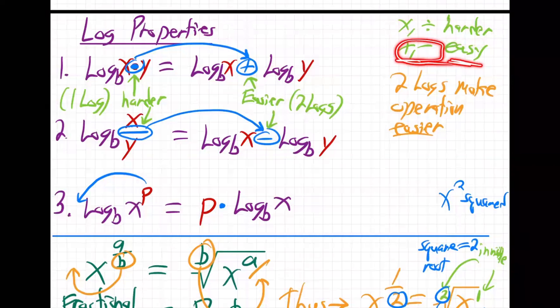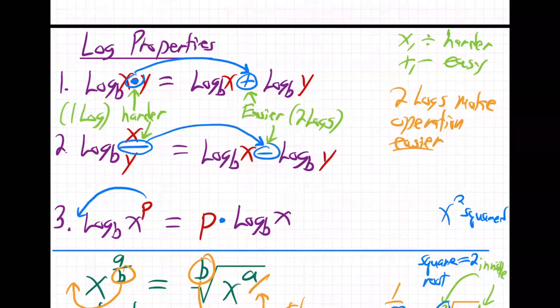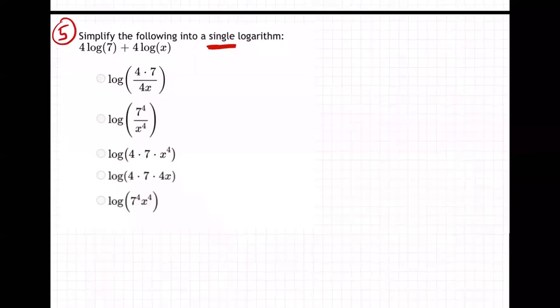When you learn adding and subtracting as a kid, those are easy operations. Those are for two logs. The job becomes easier for two logs. Two logs adding or subtracting become one log multiplying or dividing. So basically, if you have two logs added, that will go back to one log multiplied. Or if you have two logs subtracted, that'll go back to one log divided.